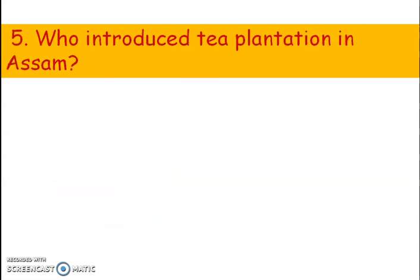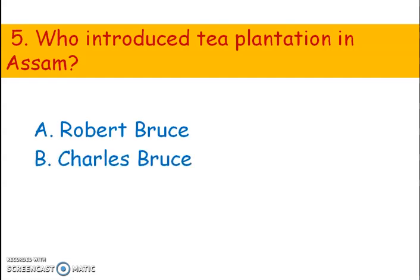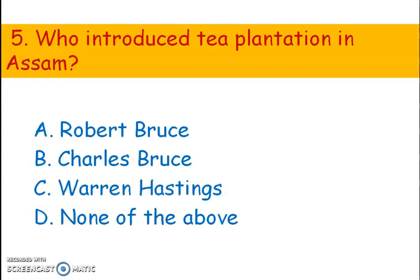Next question. Who introduced tea plantation in Assam? Options: A) Robert Bruce, B) Charles Bruce, C) Warren Hastings. The right answer is option A, Robert Bruce. Robert Bruce was a Scottish gentleman who introduced tea plantation in Assam.